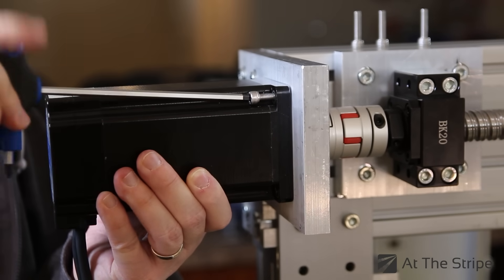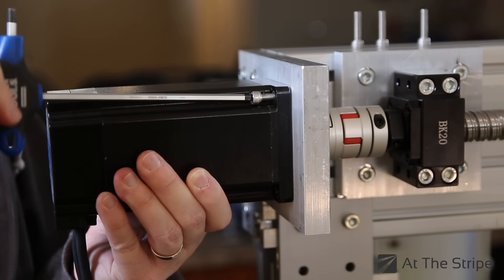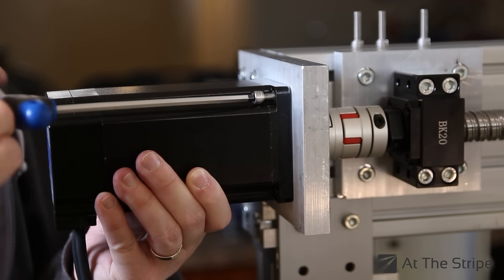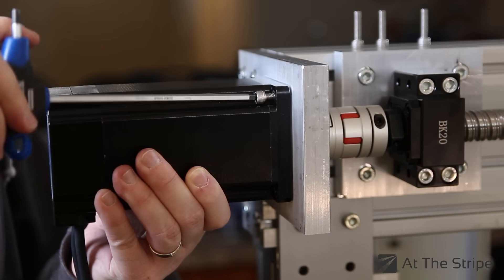We've already got the coupler for the ball screw installed and it's secured to the ball screw itself. So at this point we just install the motor and hope everything lines up, and it does, which is awesome. I can see these 6 millimeter bolts should line up into the hole in theory.